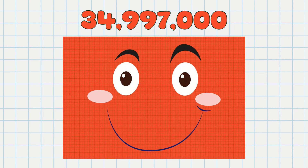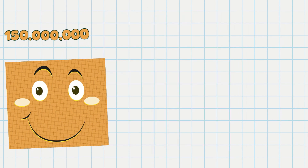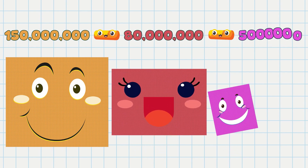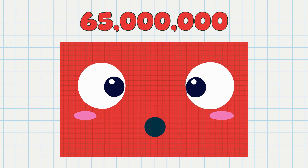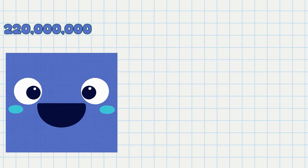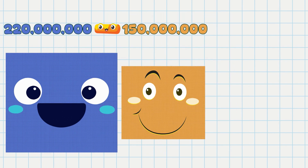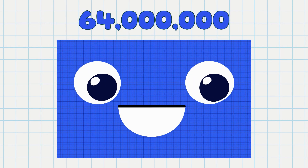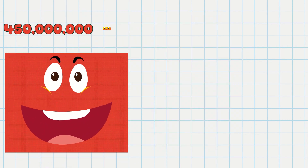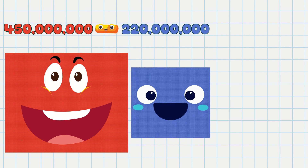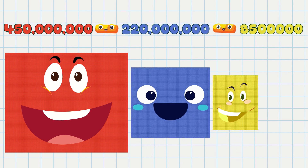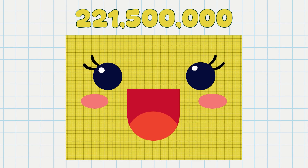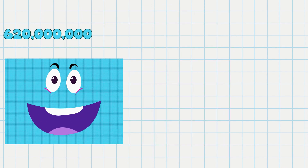34,997,150,000 minus 80,000,000 minus 5,000,000 equals 65,220,000. Minus 150,000,000 minus 6,000,000 equals 64,450,000. Minus 220,000,000 minus 8,500,000 equals 221,500,000. 620,000 minus...